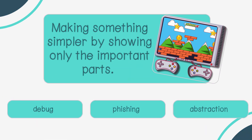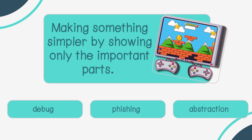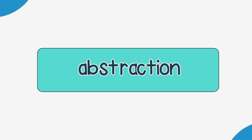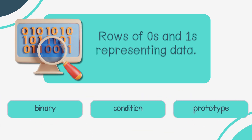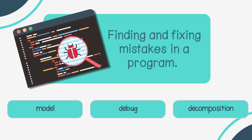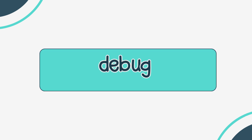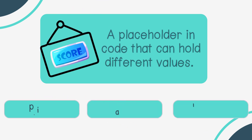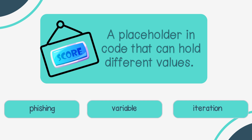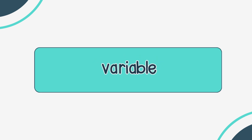Making something simpler by showing only the important parts — debug, phishing, or abstraction? Abstraction. Rows of zeros and ones representing data — binary, condition, or prototype? Binary. Finding and fixing mistakes in a program — model, debug, or decomposition? Debug. A placeholder in code that can hold different values — phishing, variable, or iteration? Variable.